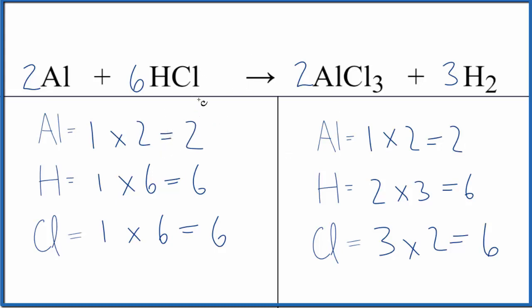If we wanted to write the states, they'd look like this. This is Dr. B with the balanced equation for Al plus HCl yields AlCl3 plus H2. The type of reaction here, single displacement.